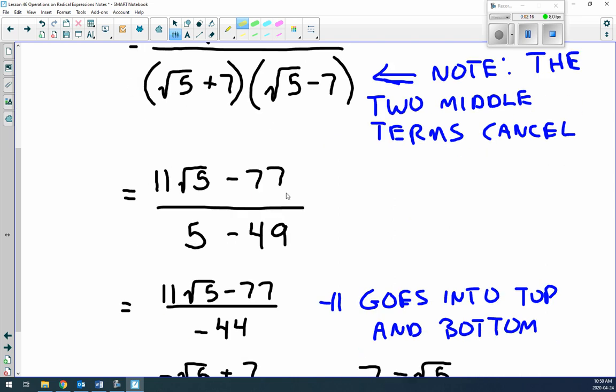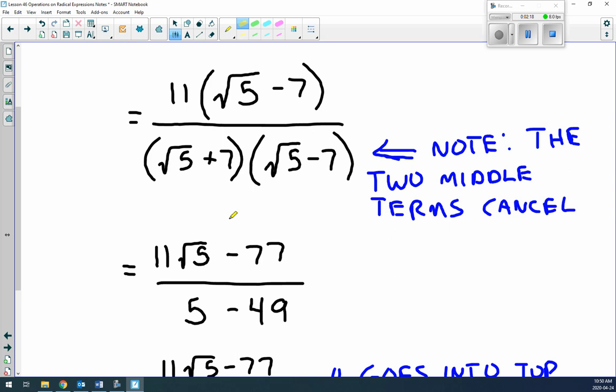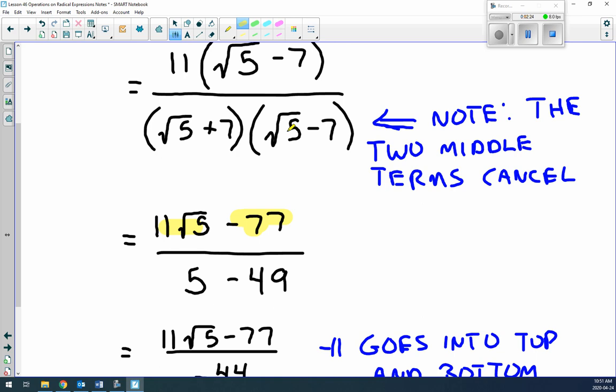It works really nice. So the top part, we do the 11. 11 times root of 5 is 11 root of 5. 11 times negative 7 is minus 77. The bottom is root of 5 times root of 5 is 5. 7 times negative 7 is minus 49.